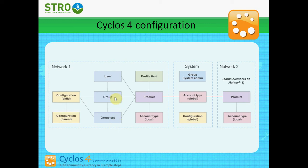For example, we can have a group called gold members, a group called silver members and a group called bronze members. Group sets can be, for example, Dutch members and English members. So you have one Dutch group set containing Dutch gold members, Dutch silver members and Dutch bronze members. And in these groups you have the users.